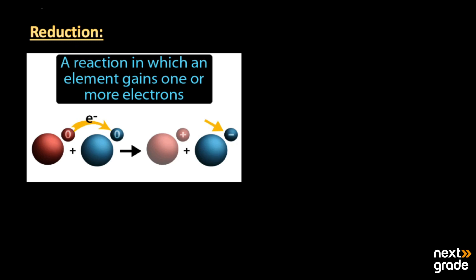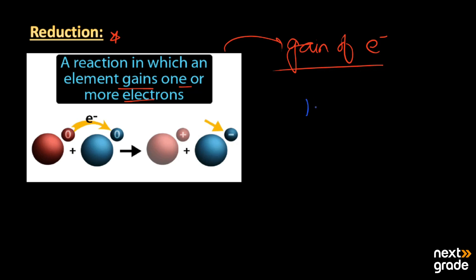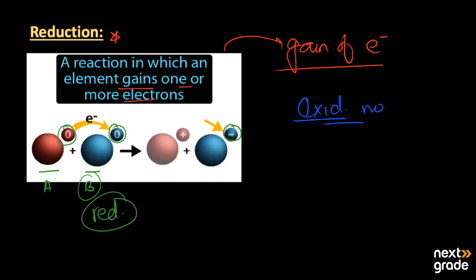After oxidation, the second type is reduction. Reduction is the reaction in which an element gains one or more electrons. Simply, the process of gain of electrons is known as reduction. When reduction occurs, the oxidation number decreases. For example, if atom A loses electrons it undergoes oxidation, while atom B gains those electrons and carries a negative charge — it undergoes reduction. After oxidation, atoms gain a positive charge; after reduction, atoms gain a negative charge.